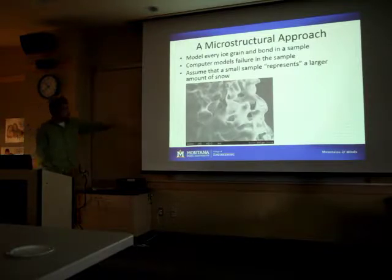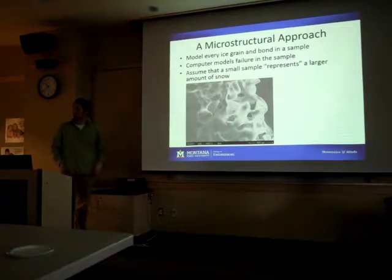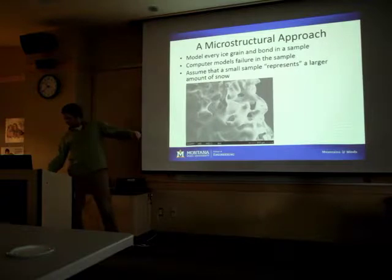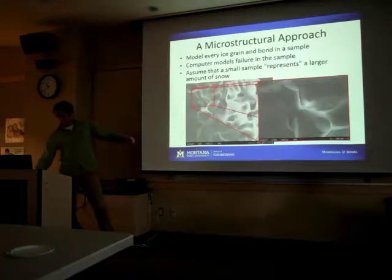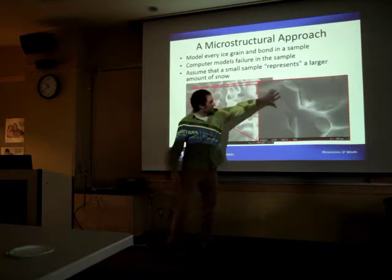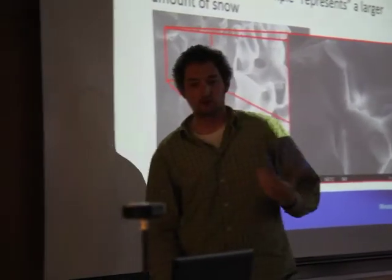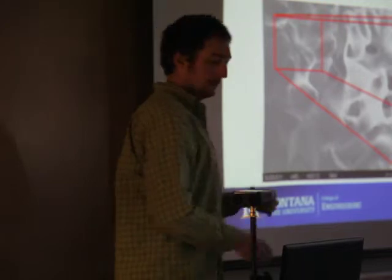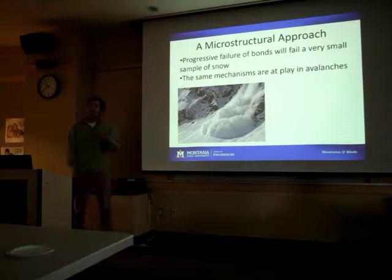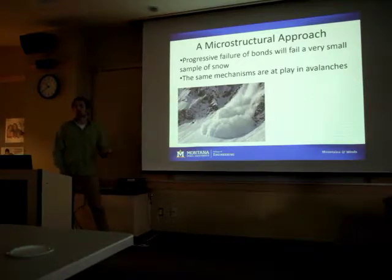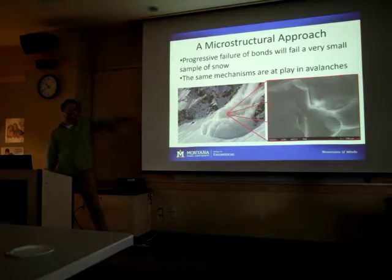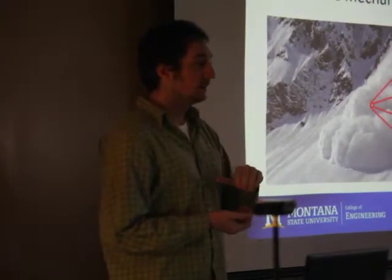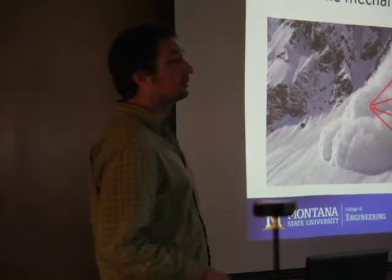I start with a sample of snow. This is a scanning electron microscope image - if you've never seen snow under an electron microscope, this is kind of what it looks like. You can pick out a grain and a bond. We're pretty sure that when snow fails, it's the bonds between the grains that are breaking. We're taking these really small samples, assuming that even in a very small sample you've got the same processes going on as in a larger chunk of snow or on a slope - even in a huge avalanche, it's still just a bunch of bonds and grains breaking apart.